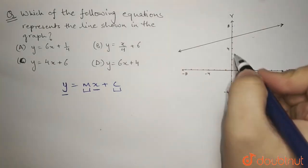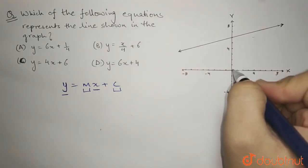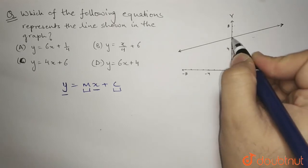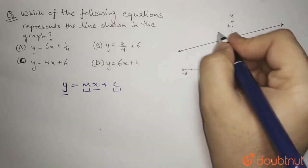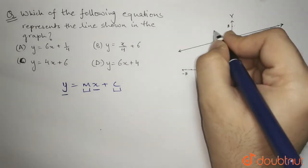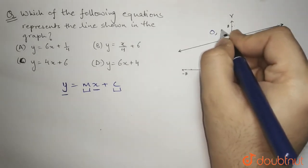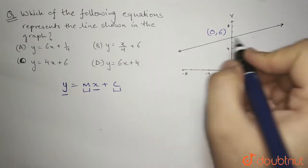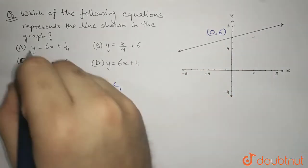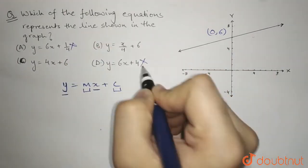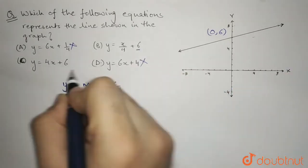So in the graph we can clearly see that the y intercept of the line is 6. So its coordinates are 0 and 6. So we can directly eliminate options a and d by looking at the y intercepts.